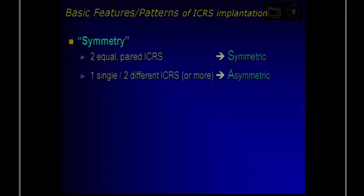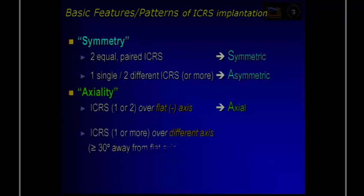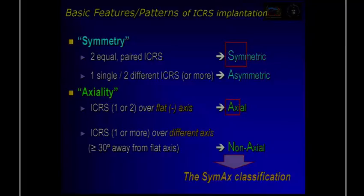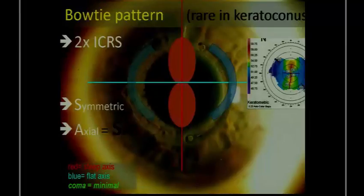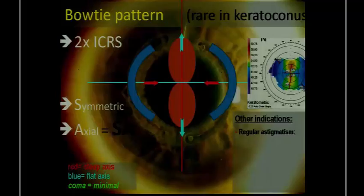What are the possible combinations? We can put either one or two implants that can be equal, paired, or asymmetric, and axiality is also important. We can have it along the axis — actual — or non-actual, meaning not along the axis. With these two components, we can have four types.